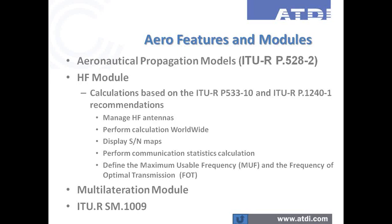The Multilateration module is also an integrated module in ICS Telecom and HTZ Warfare that helps airport authorities and civil aviation authorities model interrogators, sensors, and networks that are used to send and receive signals in order to perform accurate geolocalization of aircraft.